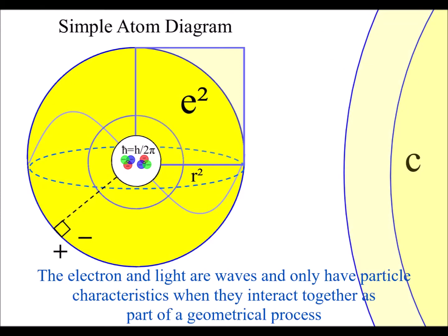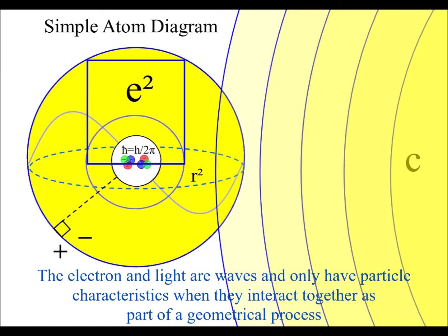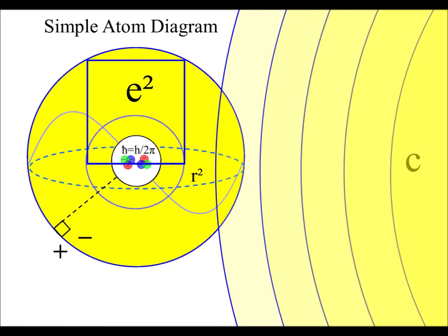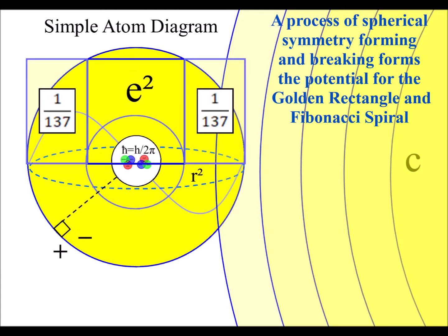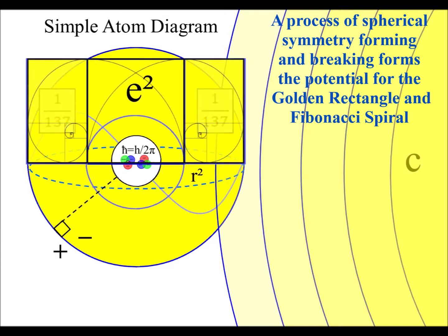In this animation, we can see that when light interacts with matter, the energy levels move towards the center of the sphere with the absorption of photon energy. The square represents a square of probability that is relative to the spherical geometry. Because of this, we have a geometrical constant on each side of the square as the energy levels drop and rise. This is the fine-structure constant, and in this theory it is a different mathematical description of the golden ratio, forming the potential for the Fibonacci spiral.